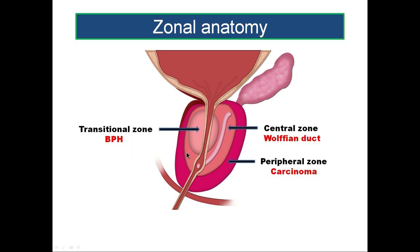The peripheral zone contributes 70 percent of the gland and is prone for carcinoma — most carcinomas arise in the peripheral zone. The next zone is the central zone, which develops from the Wolffian duct or mesonephric duct, which also gives rise to other structures in the male genital tract such as the epididymis, the seminal vesicle, the vas deferens, and the ejaculatory ducts.